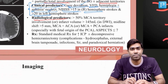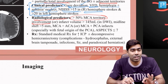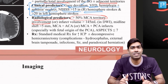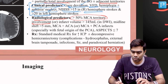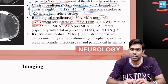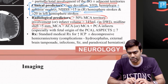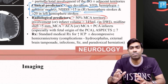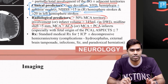Radiological predictors include: more than 50% MCA territory involvement — a very important point discussed in the ASPECTS criteria — an infarct volume greater than 145–150 cc on diffusion imaging, midline shift greater than five millimeters, and multiple territorial infarcts such as combined MCA and ACA territory or MCA and PCA territory infarcts.